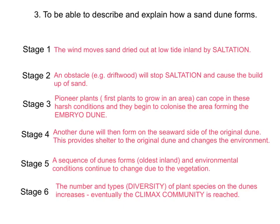Aim three is to describe and explain how a sand dune forms. I've simplified this into six stages. Listen through, then pause the video and record these stages as a flow diagram in your notes. Stage one: the wind moves sand that has been dried out at low tide inland by saltation. The tide has gone out exposing the sand, it dries out, and is then transported inland by saltation.